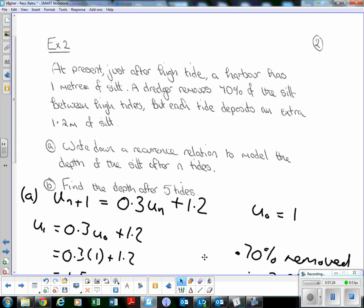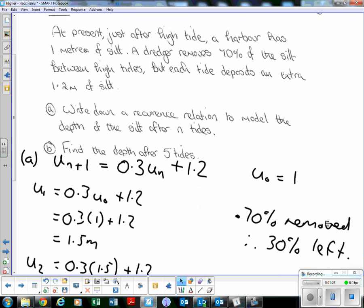If the dredger removes 70% of the silt, there'll be 30% of it left. So after the next tide there'll be 30% of what was originally there plus that 1.2 meters of silt that is deposited. We're only looking at what is remaining, not what has been taken away.